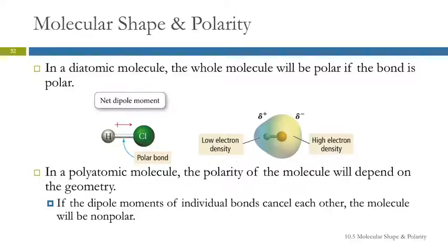Molecular shape affects molecular polarity. We talked about polar bonds and electronegativity. It's much simpler in a diatomic molecule with just two atoms. If the bond is polar, then the molecule's polar.